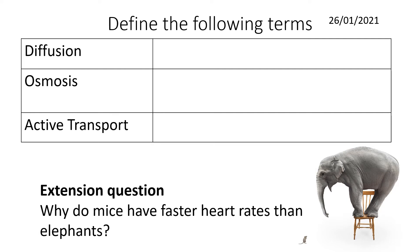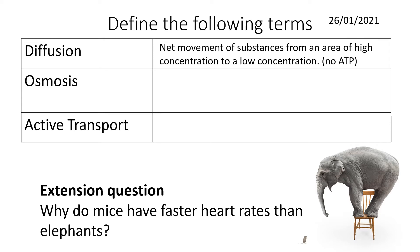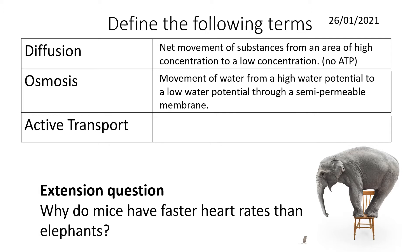Diffusion is the net movement — remember, net means the overall combined total movement — of substances from an area of high concentration to an area of low concentration. I would always recommend adding that no ATP or no additional energy is involved.